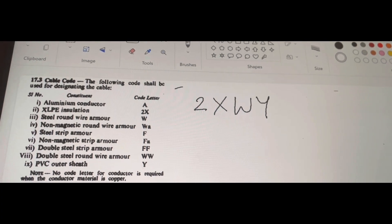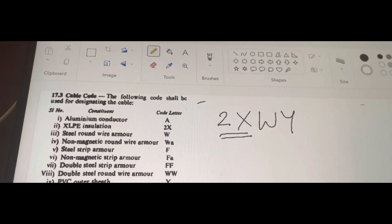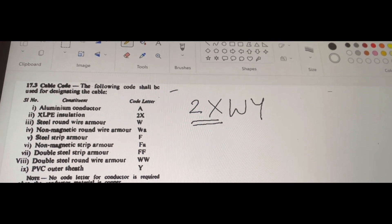So, the meaning is the first two letters 2x indicates that the insulation material used in that particular cable is cross-linked polyethylene.